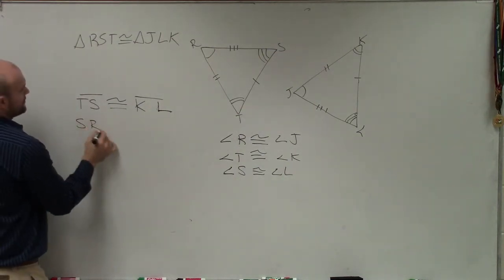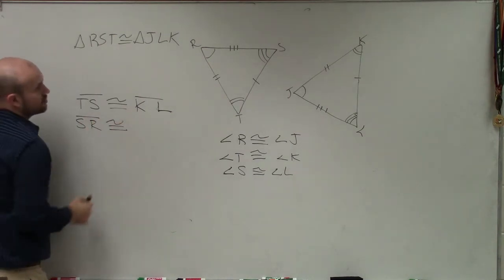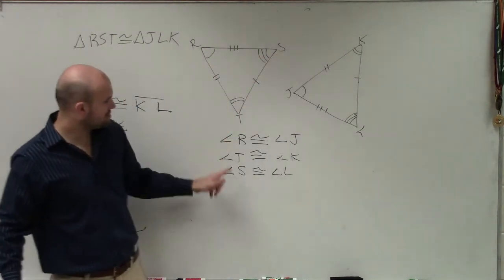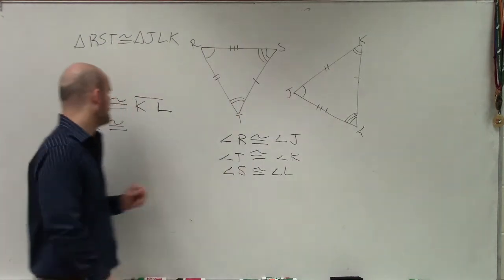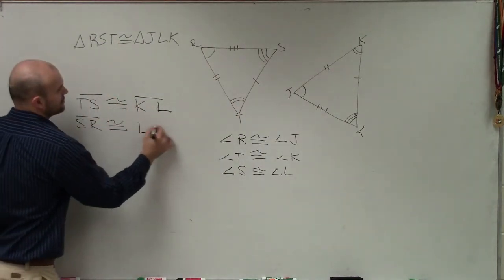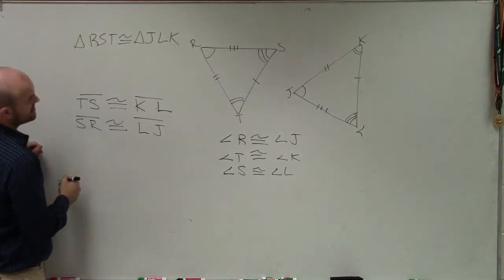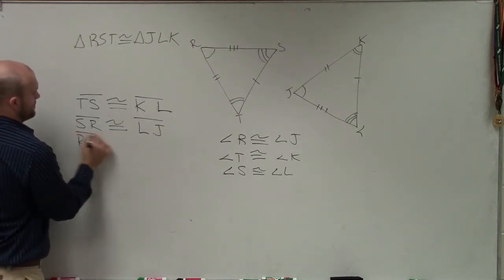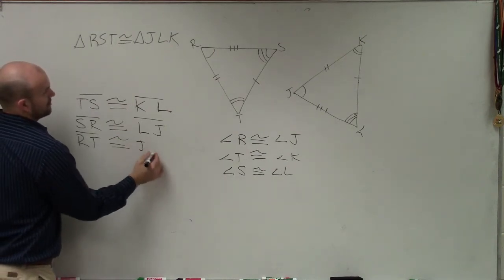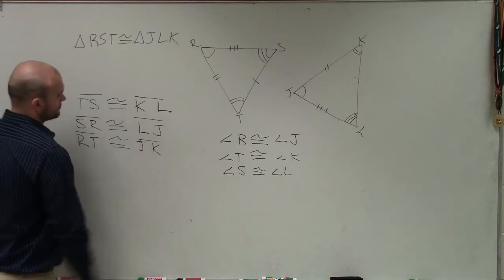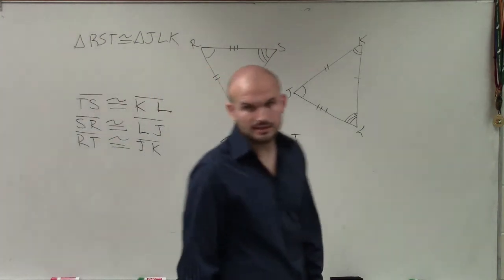Then we can just go with SR. It's corresponding - since S corresponds to L and it goes to R, we know that L is going to go to J, L to J. And then the last one is RT. RT is going to correspond to JK. And there you go.